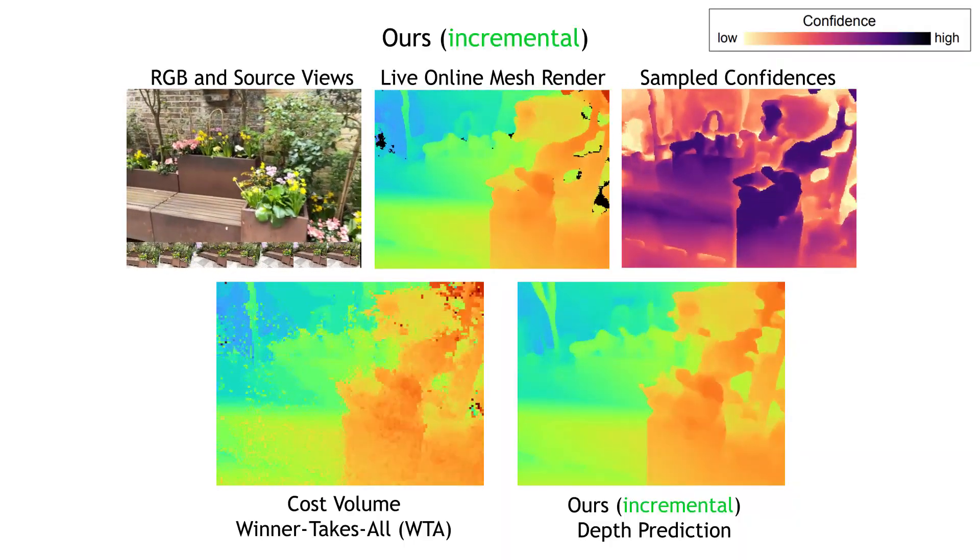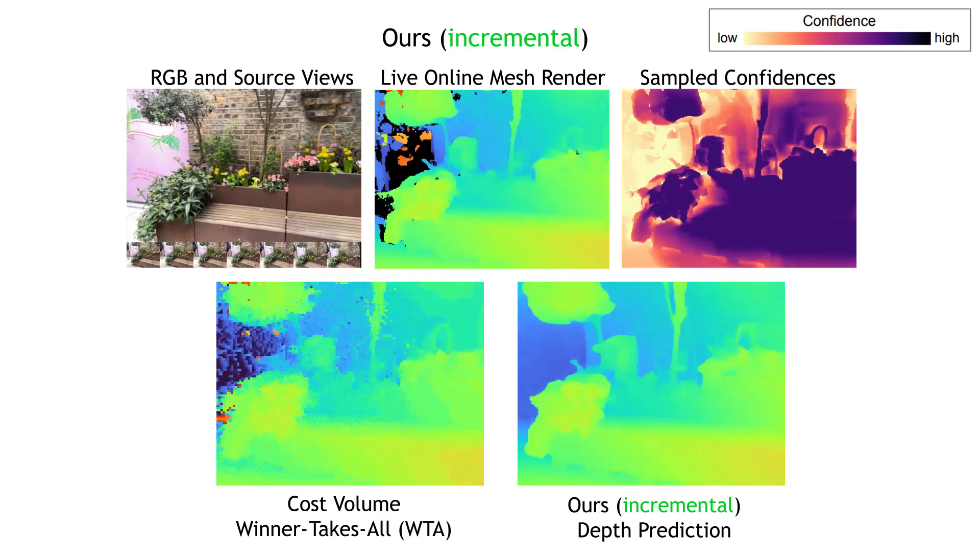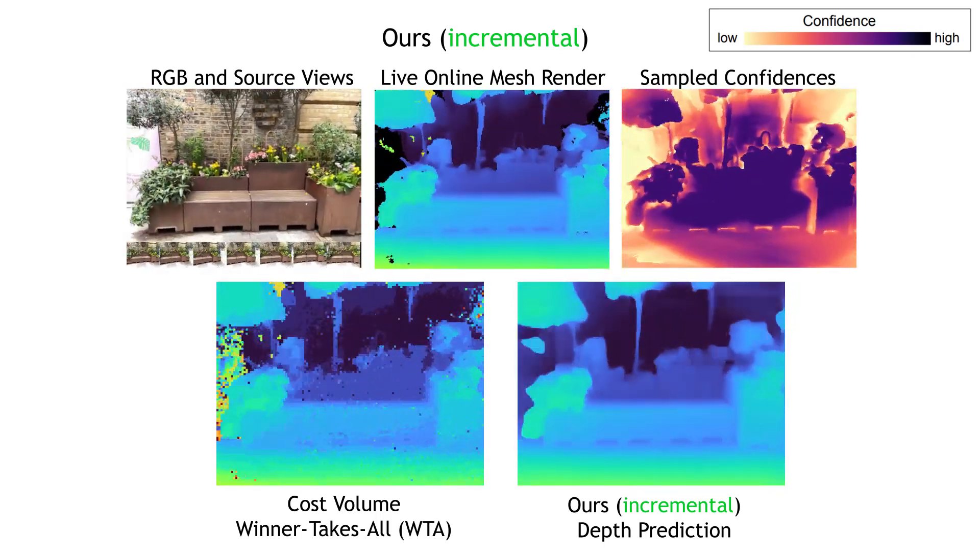While our training data doesn't contain moving objects, the model still performs well in their presence, rejecting low-confidence global geometry as a result of transient objects.